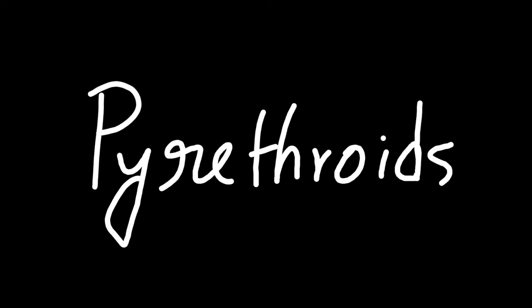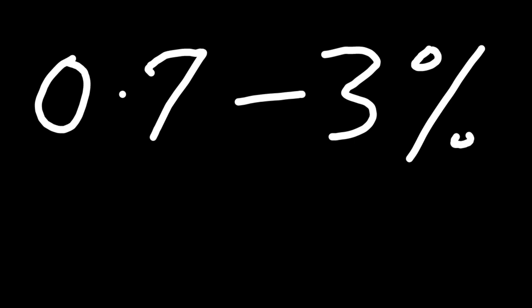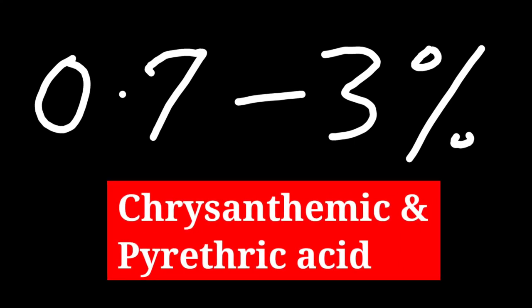What is the chemical composition of Pyrethroids? There are two esters: Pyrethrolone ester and Cinerolone ester. These two esters cannot be separated, and thus they are collectively called Pyrethrines. Pyrethrines contain 0.7 to 3% Chrysanthemum acid and Pyrethric acid.